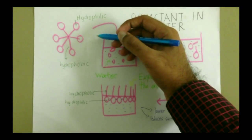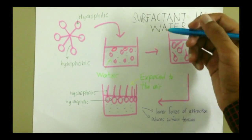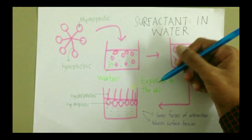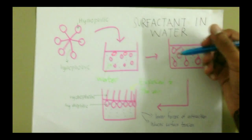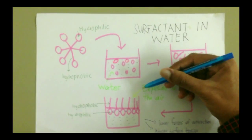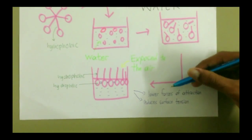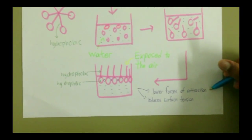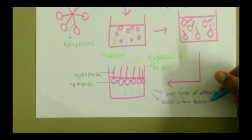When a surfactant is added into water, the hydrophobic tail is exposed to the air, while the hydrophilic head bonds with the water molecules at the surface. This lowers the forces of attraction between the molecules and hence reducing the surface tension in water.